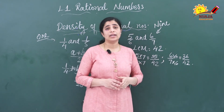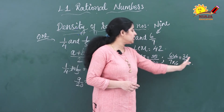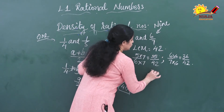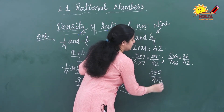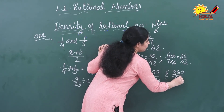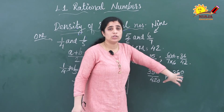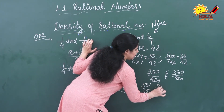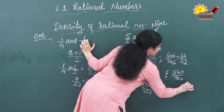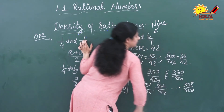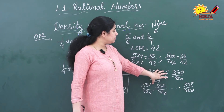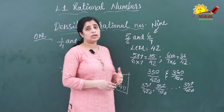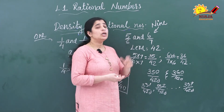So you have to change them again into equivalent fractions by multiplying both by 10, giving 350/420 and 360/420. In between these two, you can find 9 rational numbers: 351/420, 352/420, and so on up to 359/420. Thus you are getting 9 rational numbers in between the two rational numbers. This is the same method you follow to find any number of rational numbers between two given rational numbers.